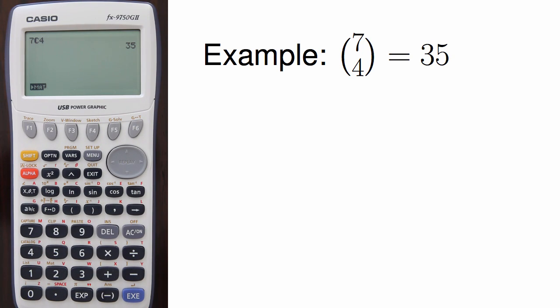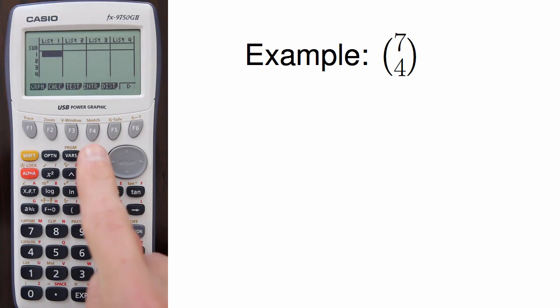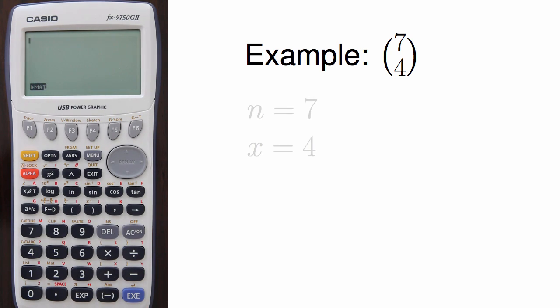Alright, if you didn't catch all that, here's a fuller description. First, I go to the Run Mat section by hitting Menu, and then I either hit 1 or navigate over to the Run Mat option. In my example, I'm going to compute 7 choose 4.